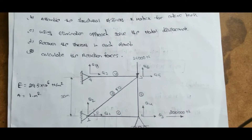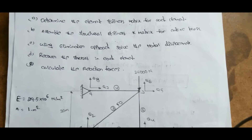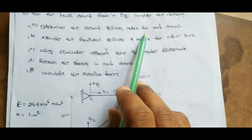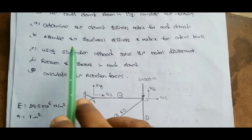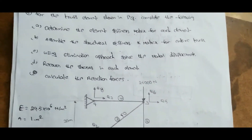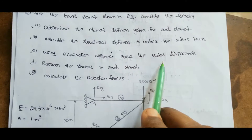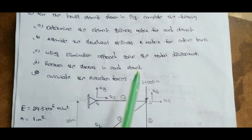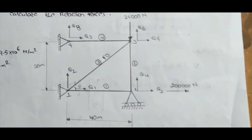In this problem, what we have to find: the element stiffness matrix for each element, the global stiffness matrix for each element, the global stiffness matrix, assemble the structural stiffness, nodal displacements, displacement at each node, and stresses in each element. This is the figure given in the problem.